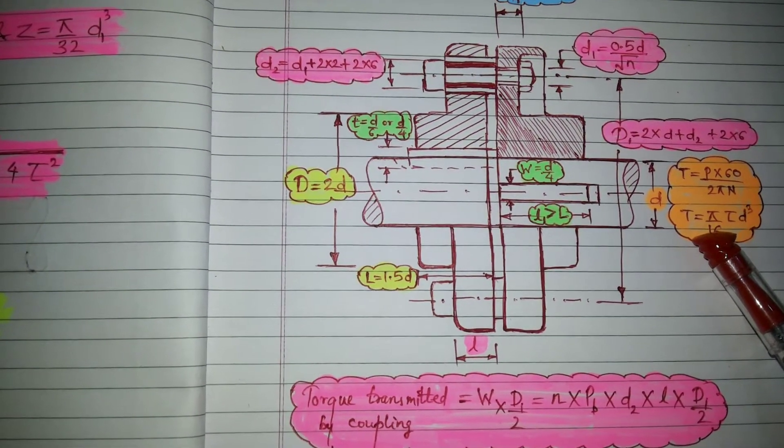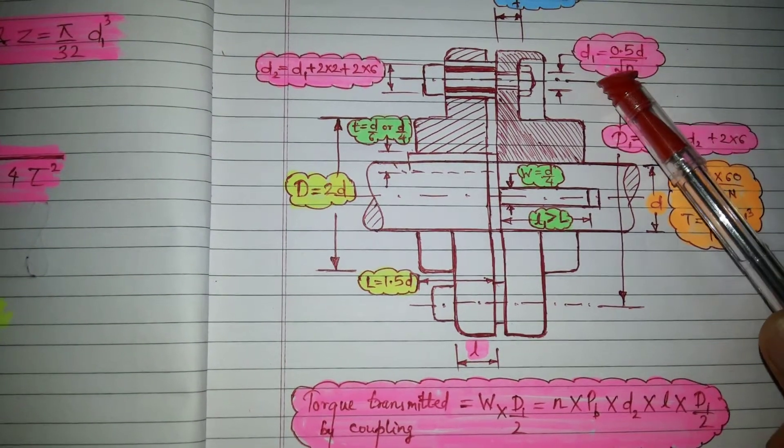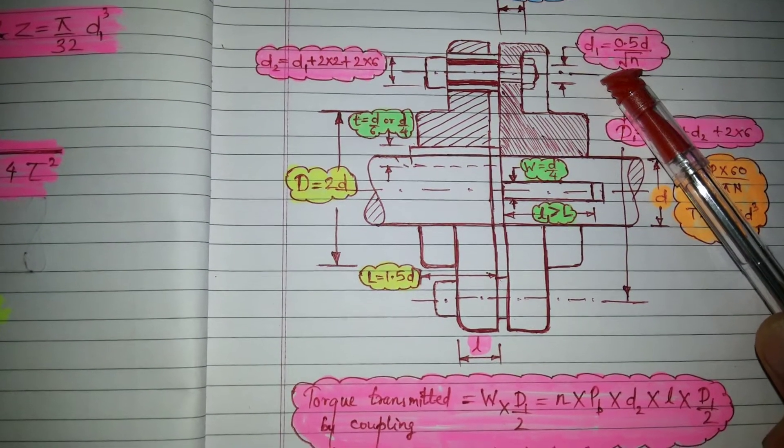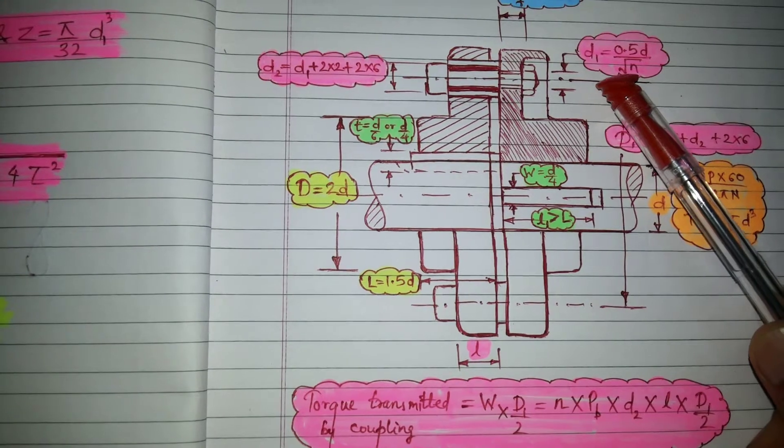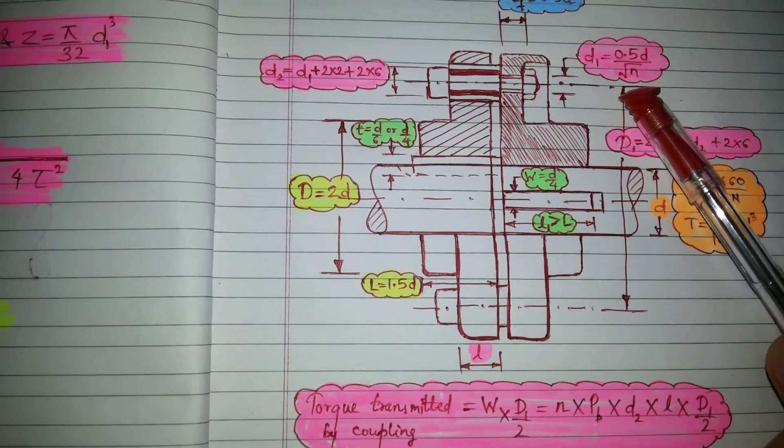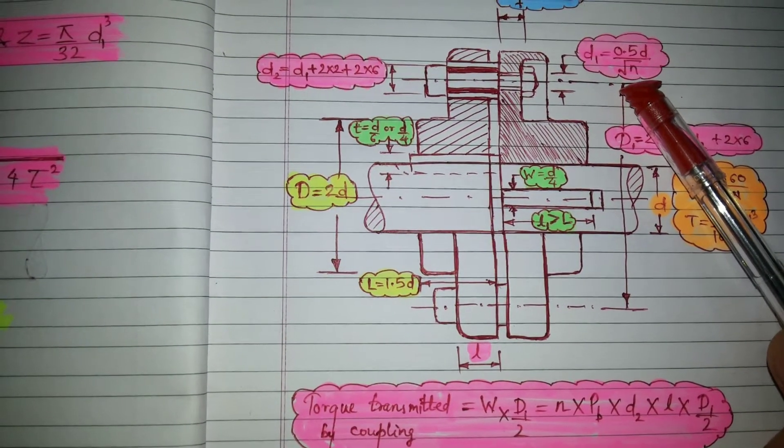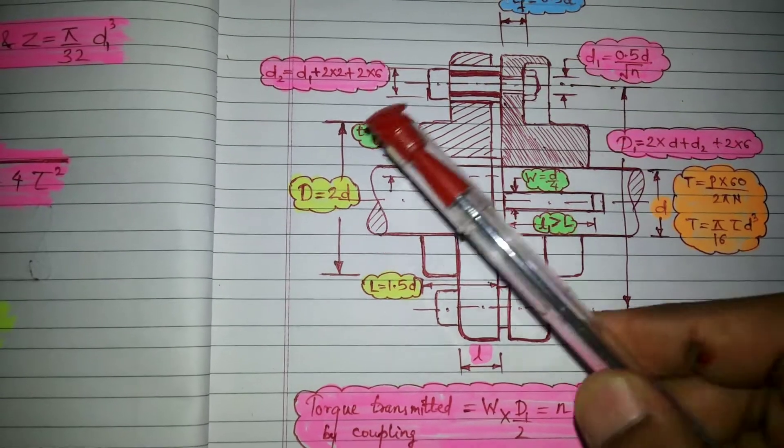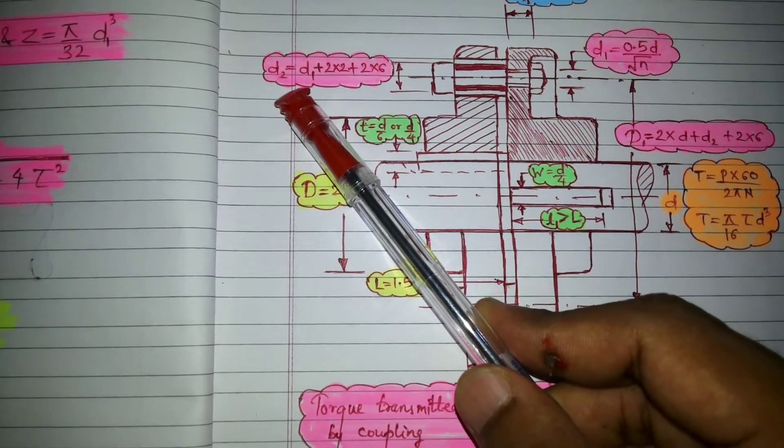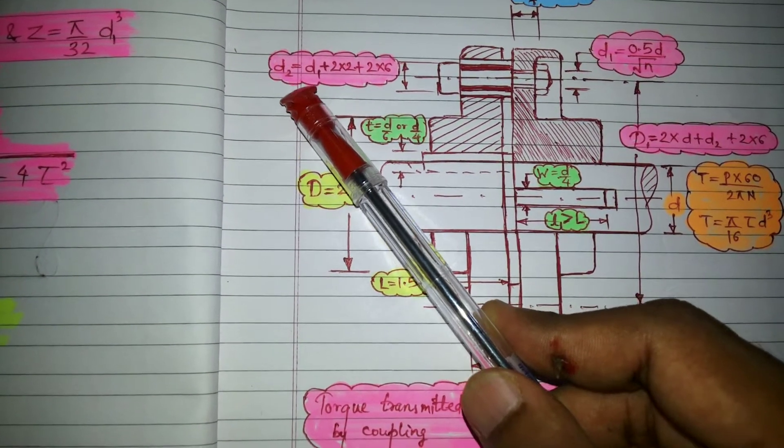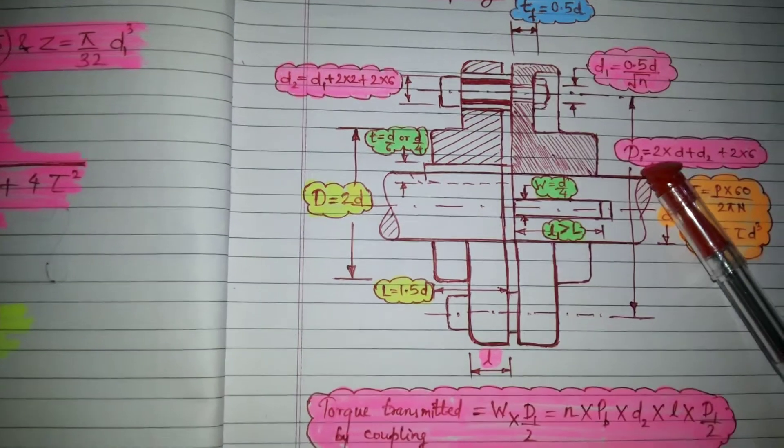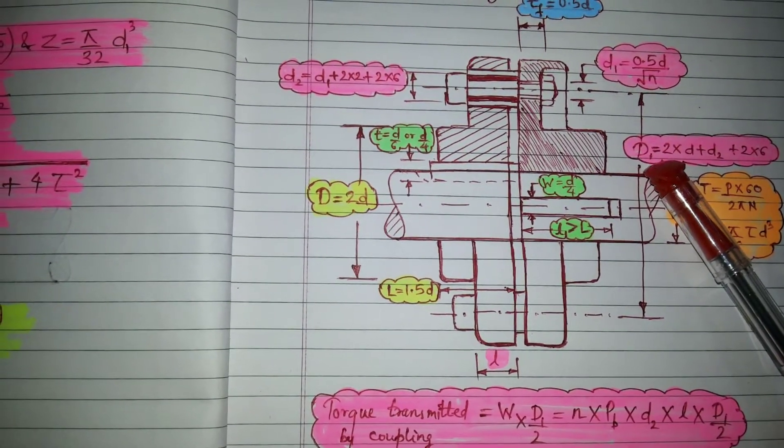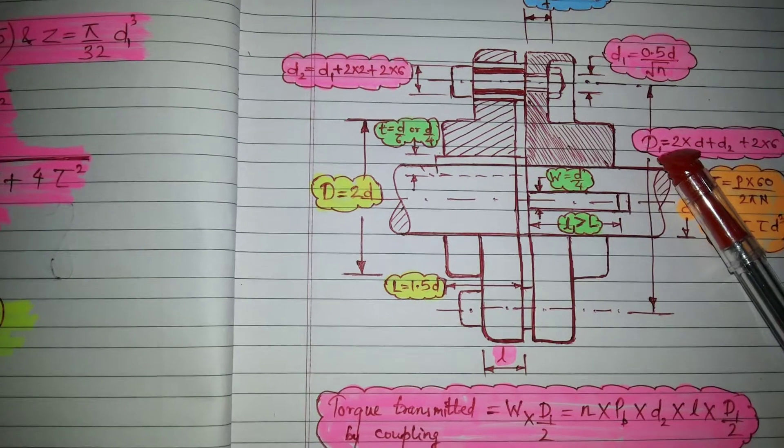Step number two, first thing which we need to find is D1 which is point five D divided by root N. And based on D1, we can calculate D2 and we can calculate D1. So this was step two.